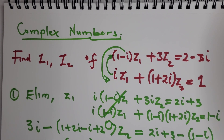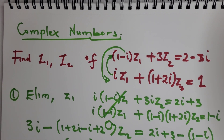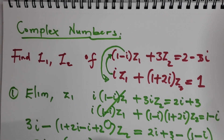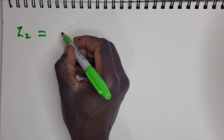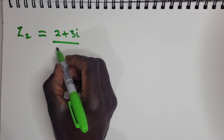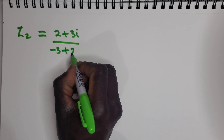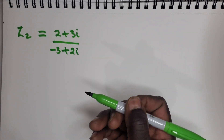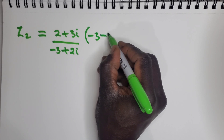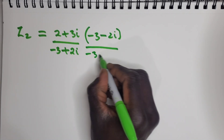Now divide both sides by two i minus three. To get rid of i from the denominator, we multiply by the conjugate. Reordering so we can identify the conjugate, z2 equals two plus three i over negative three plus two i, and the conjugate is negative three minus two i over negative three minus two i.